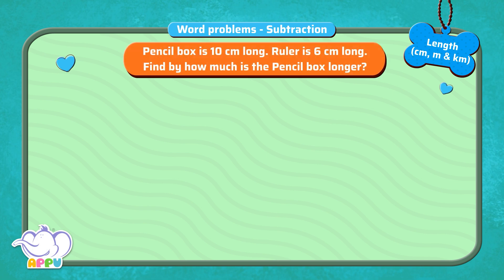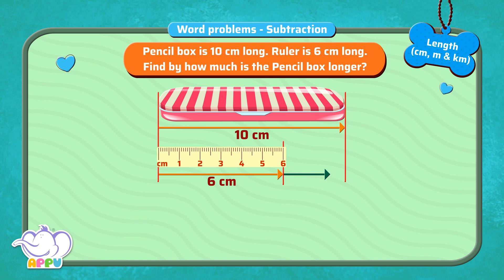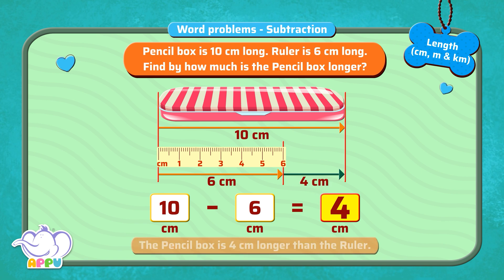A pencil box is 10 cm long. A roller is 6 cm long. Find out by how much the pencil box is longer. To find which is longer, we subtract each of their lengths. So 10 cm minus 6 cm is equal to 4 cm. So the pencil box is 4 cm longer than the ruler.